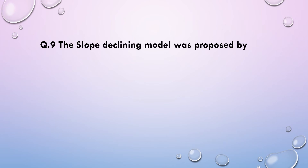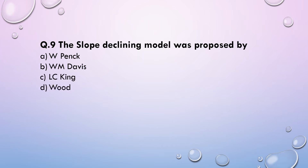Next question: The slope declining model was proposed by — (a) Walther Penck, (b) William Morris Davis, (c) L.C. King, or (d) Wood. The correct answer is William Morris Davis.